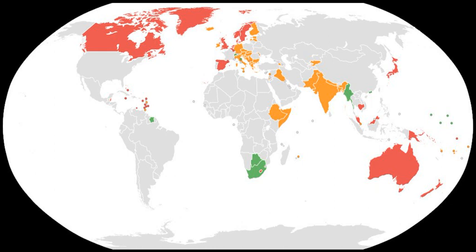Countries with parliamentary democracies may be constitutional monarchies, where a monarch is the head of state while the head of government is almost always a member of parliament, such as the United Kingdom, Denmark, Sweden and Japan, or parliamentary republics, where a mostly ceremonial president is the head of state while the head of government is regularly from the legislature, such as Ireland, Germany, India and Italy.